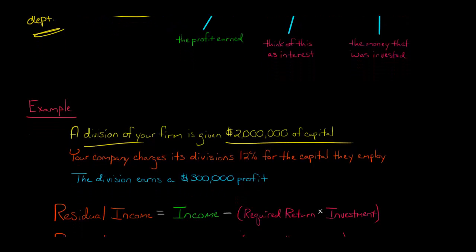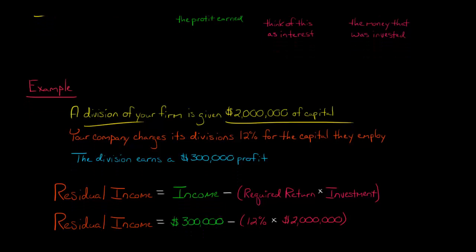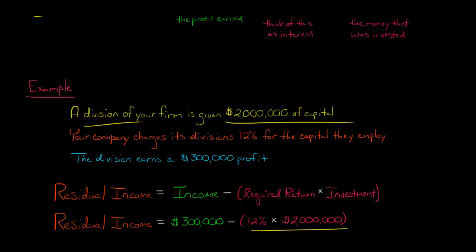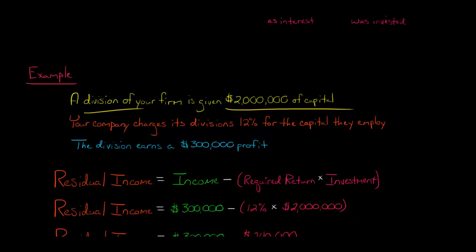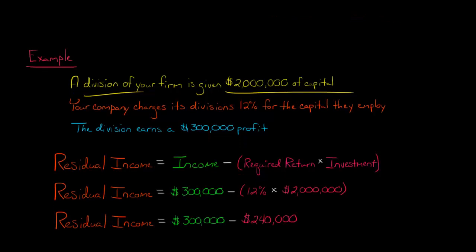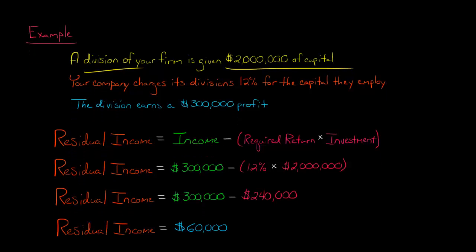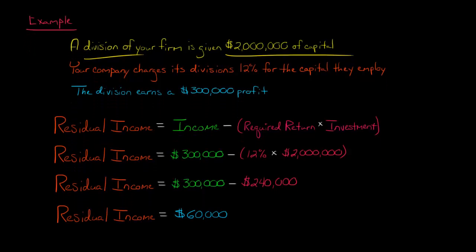We're going to take this $300,000 profit — that's our income for the division — and then we're going to subtract the required return times the amount of the investment: 12% times $2 million, which is $240,000. That's subtracted from the profit. So the residual income for this division would be $60,000.